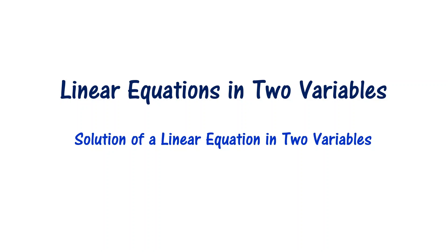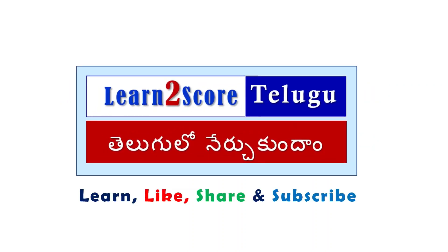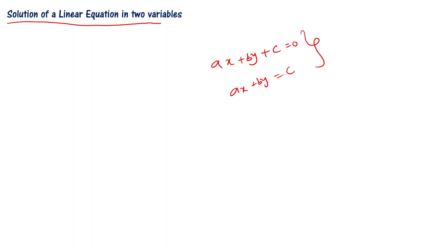This is our Part 2 video on linear equations in two variables from 9th class mathematics. In this video, we are going to discuss the solution of a linear equation in two variables. This video will help you understand the concept well. We learned that ax plus by plus c equal to 0, or ax plus by equal to c, is the generic form for a linear equation in two variables.